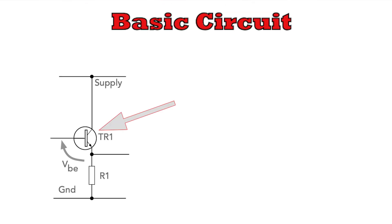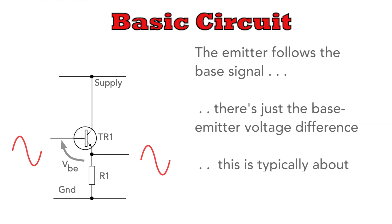In its very simplest form, the circuit consists of a transistor and an emitter resistor. When a signal is applied to the base, it causes a corresponding current to flow through the collector and emitter circuit. The emitter voltage closely tracks or follows the base voltage, there's just the base emitter junction difference which is about 0.6V for a silicon transistor.